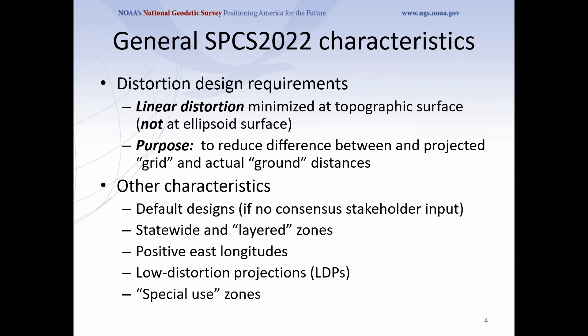A special use zone is one that's in more than one state for a special application. For example, Yellowstone National Park is in three different states — if they had a good enough use case for their own state plane zone, it would be a special use zone because it spans three different states.